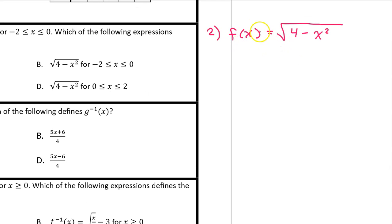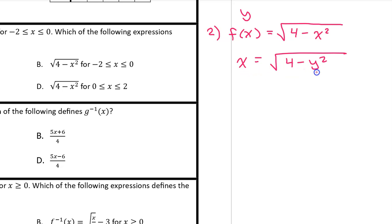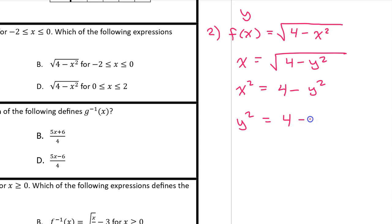Let's find an expression for f inverse. f of x is another name for y. The first step of finding the inverse is to switch x and y, so we get x equals the square root of 4 minus y squared. Now we must solve for y. Squaring both sides, we get x squared equals 4 minus y squared. Adding y squared to both sides and subtracting x squared gives us y squared equals 4 minus x squared. Taking the square root of both sides, we get y equals the square root of 4 minus x squared.